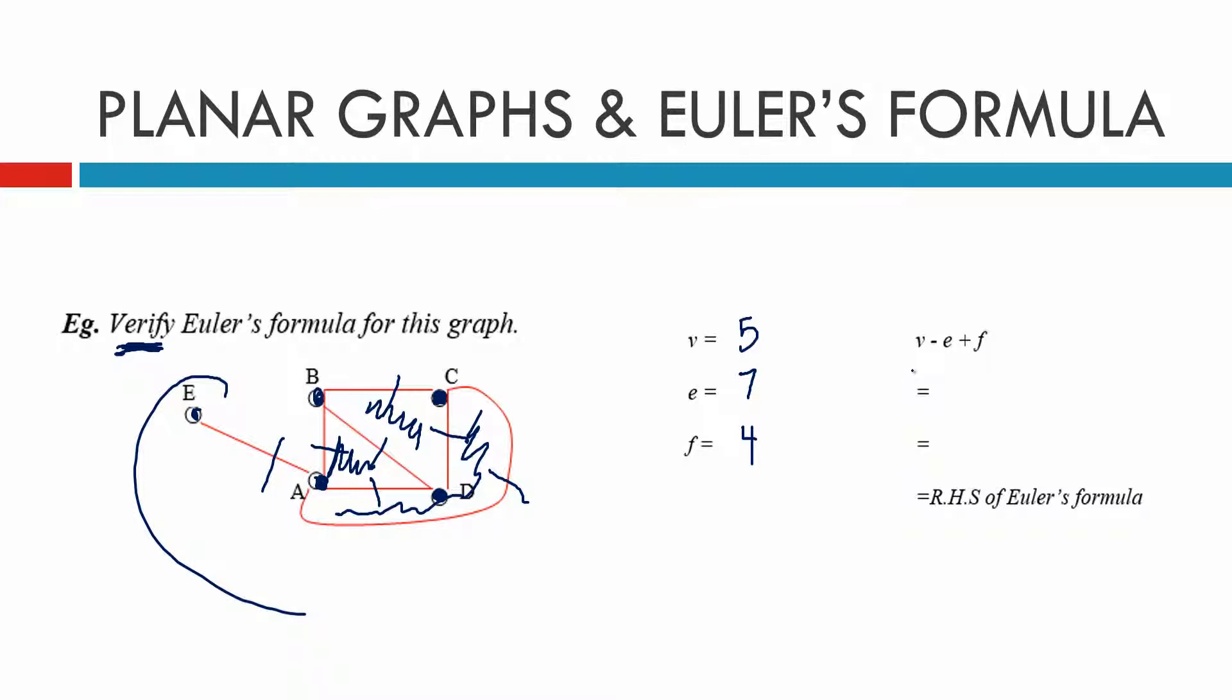So we've already got the rule up. V minus E plus F. We start with the left hand side. So we get V. There's 5V minus 7E plus 4. And when we work that out, we get an answer of 2. And then we say which equals right hand side of Euler's rule. That's how we verify something. We don't write both sides down.